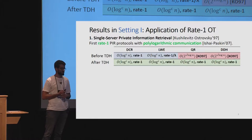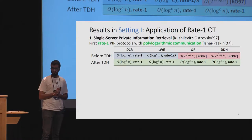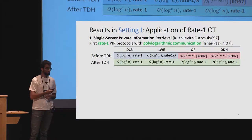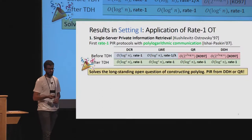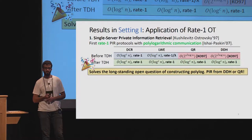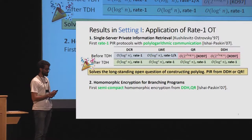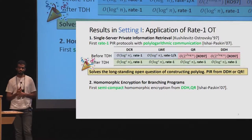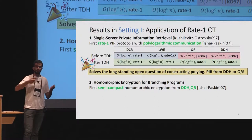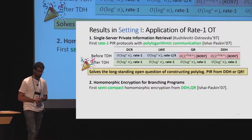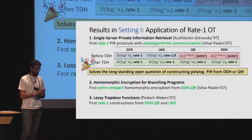Rate-1 OT also has powerful applications. The first is private information retrieval: using our rate-1 OT protocols, we get the first single-server PIR protocols with both poly-logarithmic communication and optimal download rate — the first such construction from DDH, QR, and LWE — solving the open question of constructing PIR with poly-log communication from DDH or QR. The second application yields a homomorphic encryption scheme for branching programs where ciphertext length grows only with the program length, independent of its width. The third gives the first optimal-rate constructions for lossy trapdoor functions from DDH, QR, and LWE.